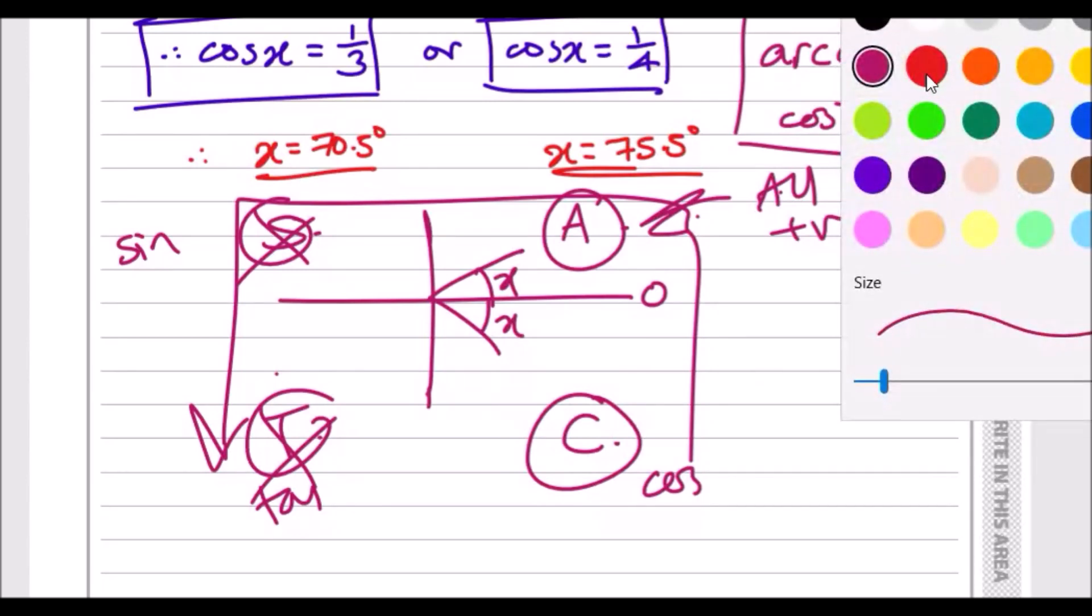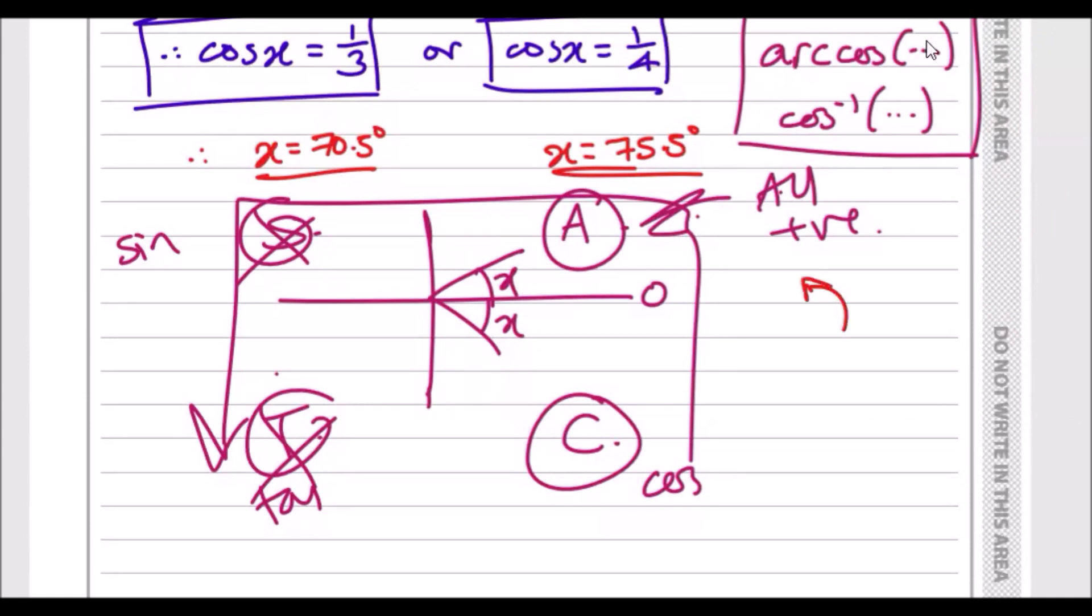First things first, we start from here and go to here and say we traveled x degrees. Then we draw another line and say we traveled almost a full circle but x degrees less, so we also traveled 360 minus x degrees.